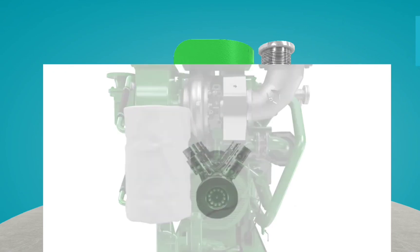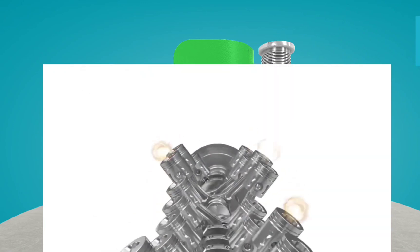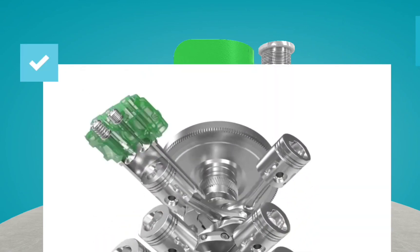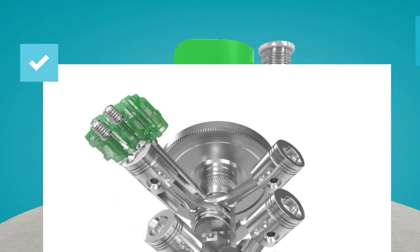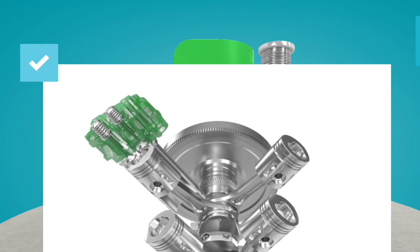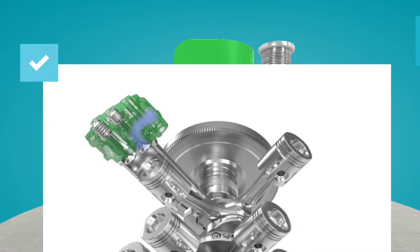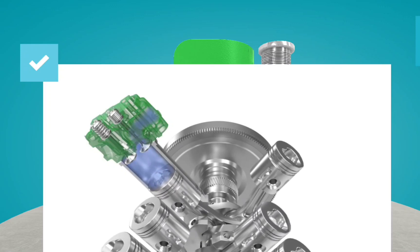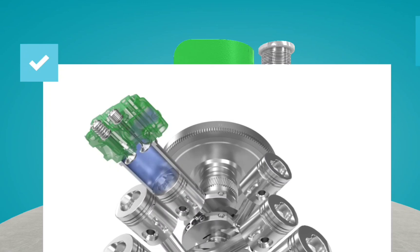Jenbacher gas engines are spark-ignited four-stroke engines. Let's look at each stroke in detail. During the intake stroke, the inlet valve is opened, and the piston moves downwards, sucking the air-gas mixture into the combustion chamber.